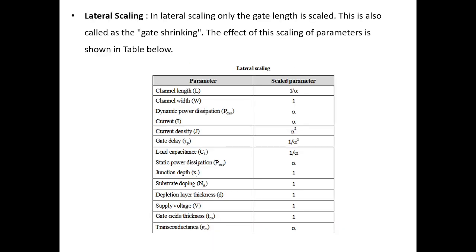Next, we will see about lateral scaling. In lateral scaling, only the gate length is scaled — this is also called gate shrinking. In this method, channel width, junction depth, substrate doping, depletion layer thickness, supply voltage, and gate oxide thickness are all kept at 1 (unchanged). The remaining parameters are scaled by the parameter alpha.